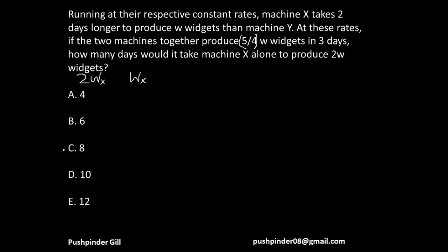Let's start with the C option. Whenever you try to use the options, start with the C option because the options are in ascending order. So if machine X is taking eight days to produce 2W widgets, to produce W widgets it's gonna take four days.